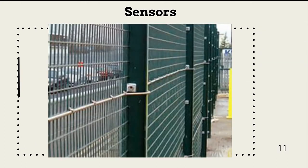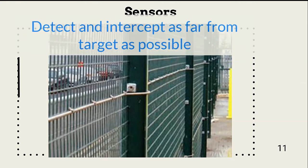Now we move to non-visual sensors. We want to detect and intercept the intruder as far from her target as possible. This means alarm sensors begin with the site perimeter. In this example, a fence barrier is equipped with a vibration sensor tuned for meaningful movement.